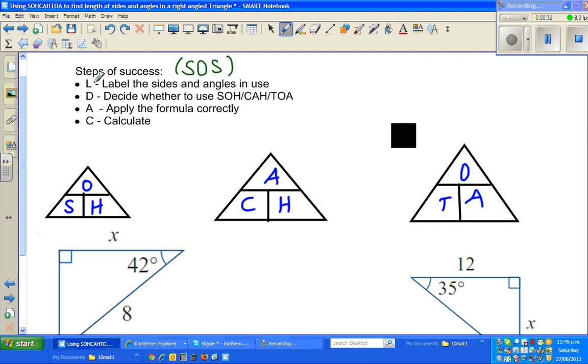I would like you to go over these steps, which I call the steps of success or in short SOS. First is label the sides and angles, decide whether to use SOH CAH TOA, which of them, apply the formula correctly and calculate.